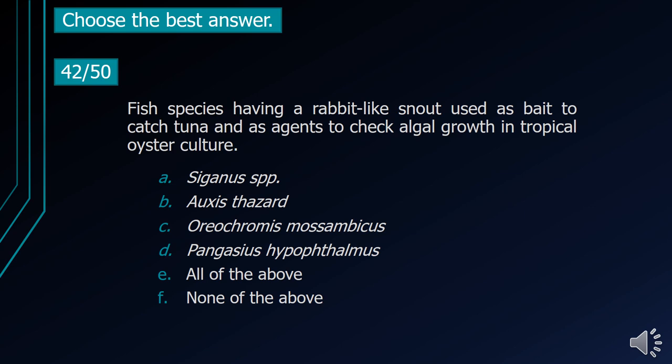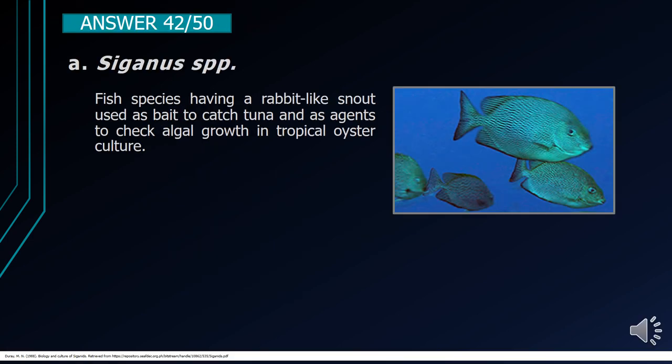Number 42. Fish species having a rabbit-like snout, used as bait to catch tuna and as agents to check algal growth in tropical oyster culture. A. Siganus spp. B. Auxis thazard. C. Oreochromis mossambicus. D. Pangasius hypophthalmus. E. All of the above. F. None of the above. The correct answer is letter A, Siganus spp. These fish have a rabbit-like snout, are used as bait to catch tuna, and serve as agents to check algal growth in tropical oyster culture.